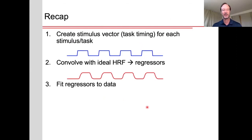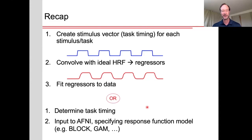So just to recap, step one is you create the stimulus vector or provide the task timing for each stimulus or task. You would convolve this with the hemodynamic response function in order to get your regressors and then fit these regressors to the data. Or alternatively, you simply determine what the task timing is. And then in the analysis program, such as AFNI, you would simply specify what response function model you want to use, that is what hemodynamic response function. And then AFNI would go internally, do all of the convolution creating these regressors, and then you fit those regressors to the data. So this, in a nutshell, is the basis for model-based image analysis with fMRI.